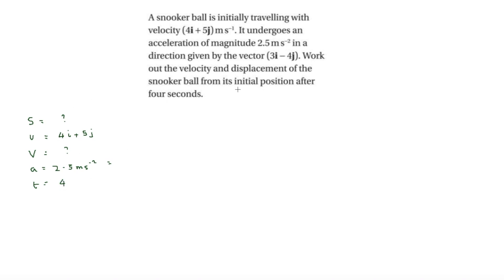The direction is given by the vector 3i minus 4j. If we do the square root of 3 squared plus 4 squared, we have a 3-4-5 triangle, which equals 5. We can see that 5 is twice 2.5, so the acceleration is half of this vector. Therefore the acceleration is 1.5i minus 2j.